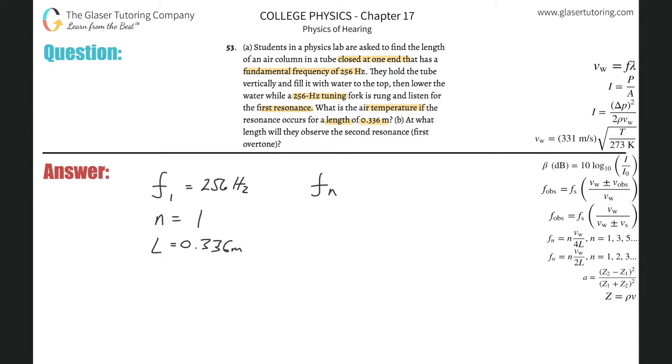And we have the formula here. It says that the frequency of the nth harmonic will be equal to the nth harmonic multiplied by the velocity of the sound through that particular medium. In this case, it's air divided by 4L. And n can take on these odd values: 1, 3, 5, etc. The first resonance correlates with the first harmonic.